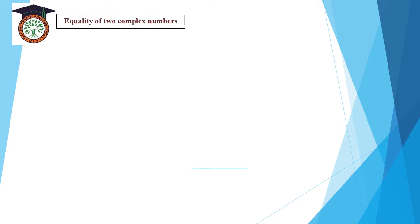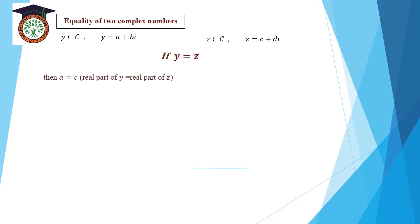Equality of two complex numbers. If Y belongs to C and Y equals a plus bi, and Z belongs to C and Z equals c plus di, then if Y equals Z, we must have a equals c — the real part of Y equals the real part of Z — and b equals d — the imaginary part of Y equals the imaginary part of Z.